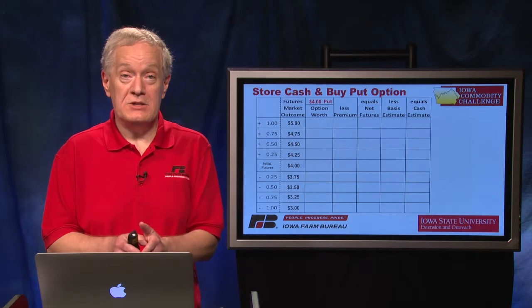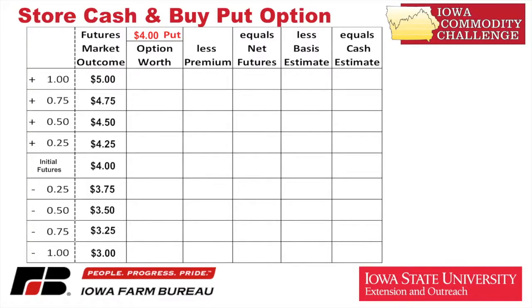We do have another video in this series that explains option terms. So this four-dollar put — the right to sell futures at four dollars — is going to be worth something at different futures contract outcomes. Let's concentrate on the lower half of the table. If the market went down to $3.75, the right to sell futures at four dollars would be worth 25 cents. If the market goes down to $3.50, it's worth 50 cents. And all the way down to three dollars, the right to sell futures at four dollars is going to be worth a full dollar.